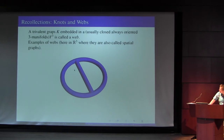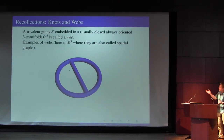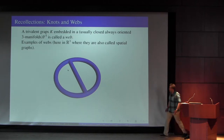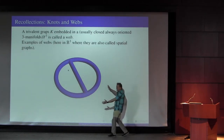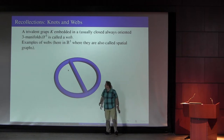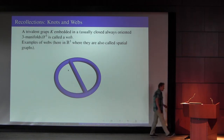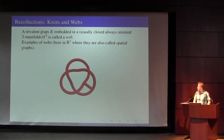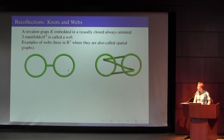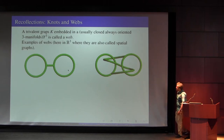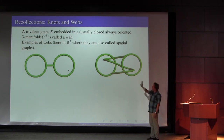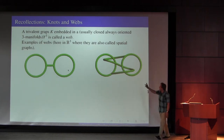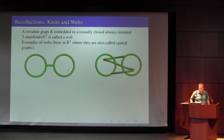The gadget that we want to think about is this: a trivalent graph embedded in three-space, or more generally, a three-manifold. It could be a knot. It very much depends on how the thing sits in three-space. The abstract graphs are the same, but the way they're embedded is different in those examples.